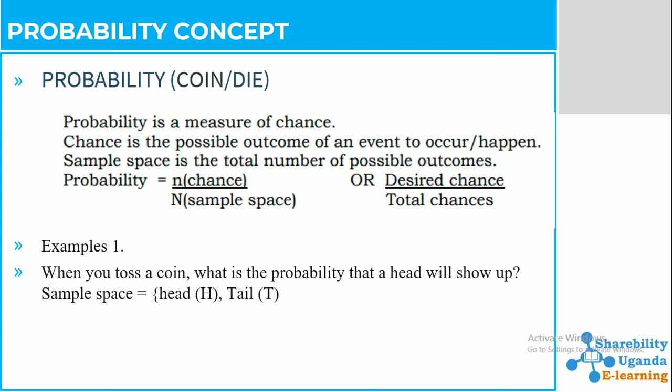Probability is all about chances and also about sample spaces — that is the expectation of the outcome. For example, if your school is going to play football, you have to expect a chance for your school to win. That is a chance. You also have to expect the results — maybe your school is going to score five goals to nil. That is all about probability.